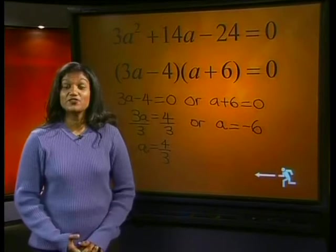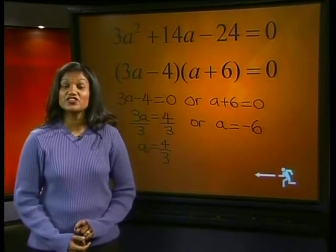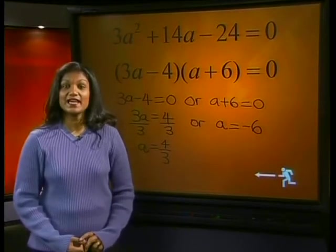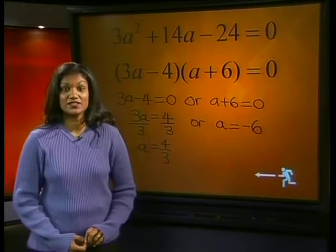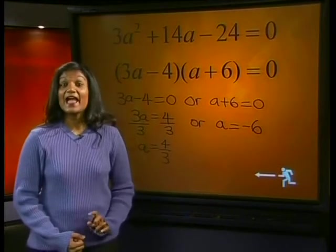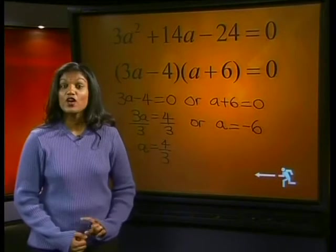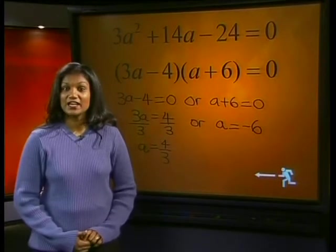So, there we have it. Remember, we solved the equation 6a² + 28a - 48 = 0. We found the roots of this equation to be a = 4/3 or a = -6.